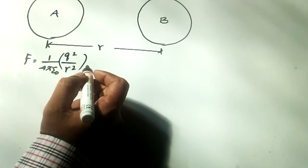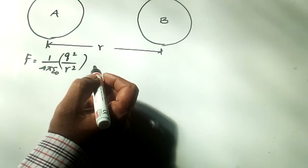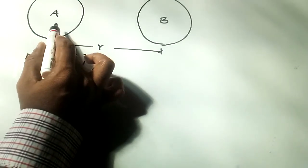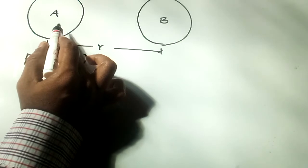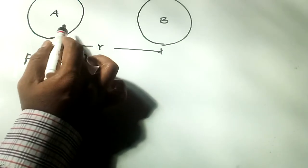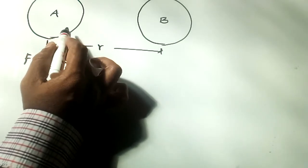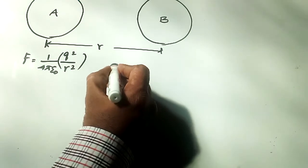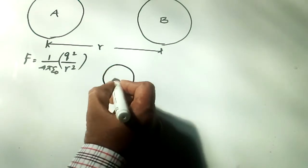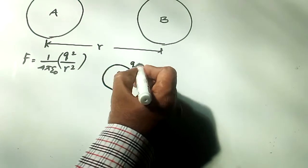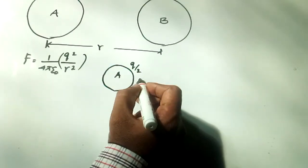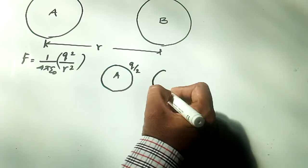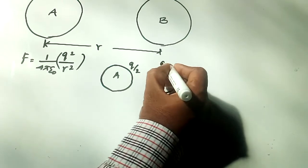Further, when an uncharged sphere C is brought into contact with sphere A, the charge on both becomes Q/2. Now sphere A has charge Q/2 and sphere C also has charge Q/2.